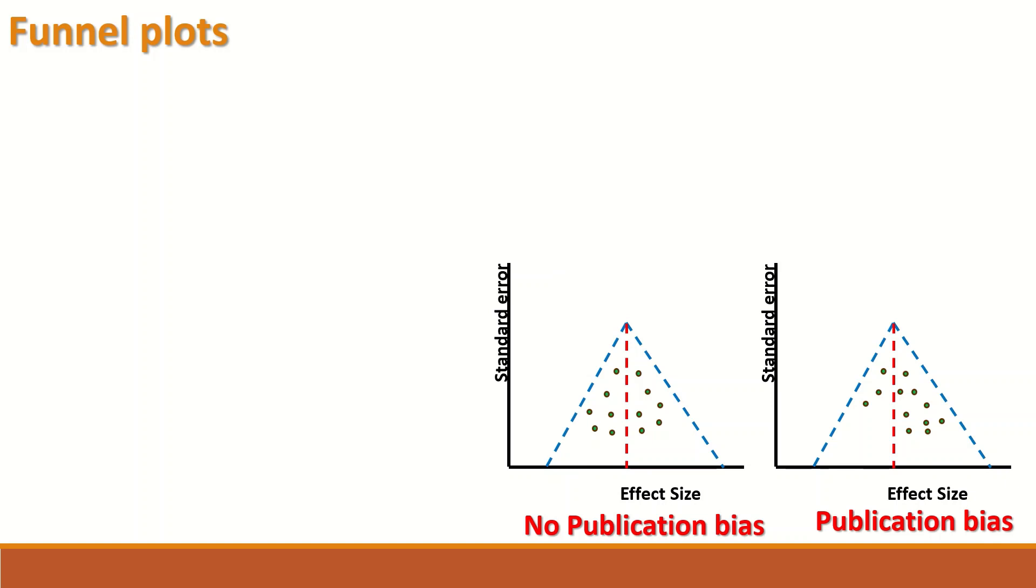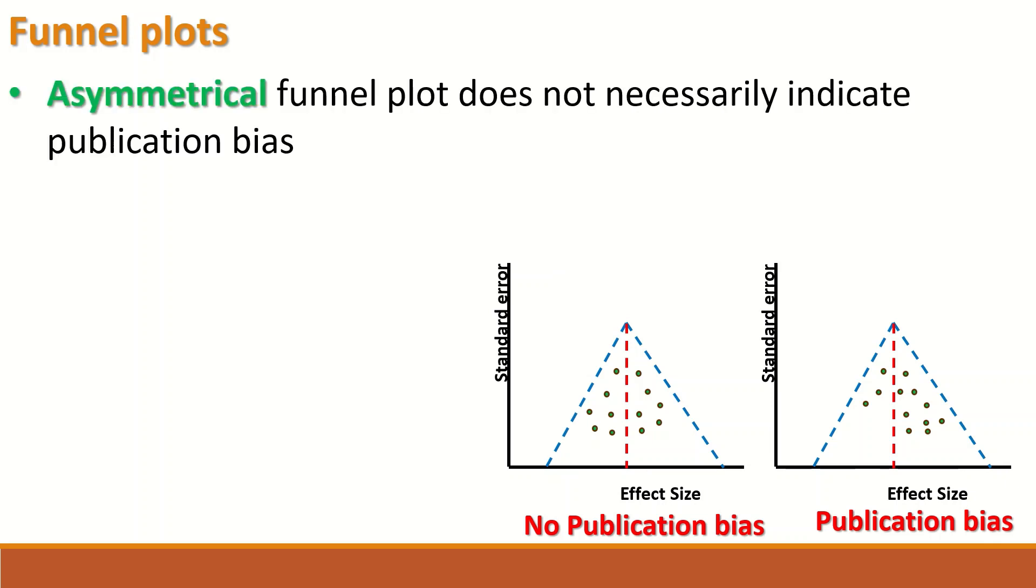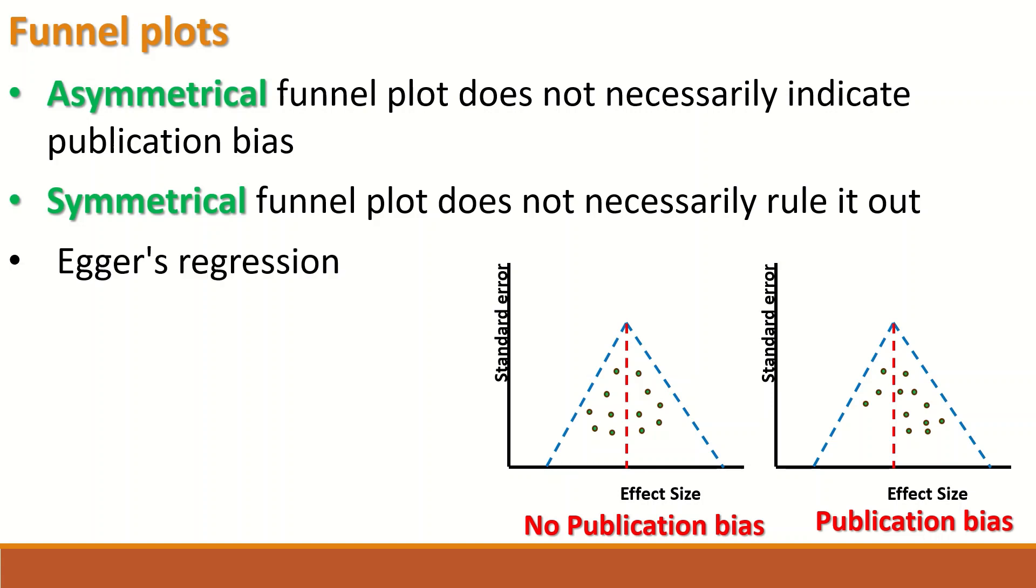Last remark before closing: when there is asymmetrical funnel plot, it does not necessarily indicate publication bias. And when there is a symmetrical funnel plot, it does not necessarily rule it out. So what do we have to do? We have to back up the observation, visual examination, and conclusion based on the visual examination with a test, which is Egger's regression test.